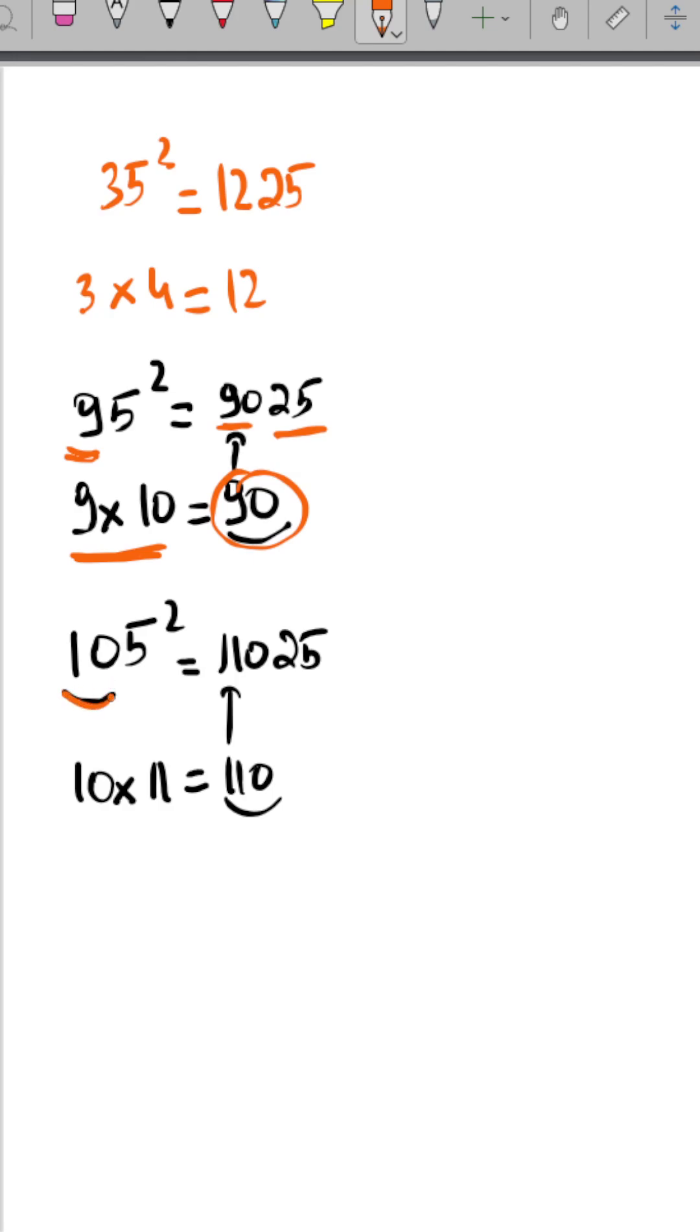Now in cases where we have numbers with more than two digits, you take anything before the 5. So in this case we have two numbers, you multiply it by the next one which is after 10, which is 11, and you get 110. You add it and you add to it 25. Very easy.